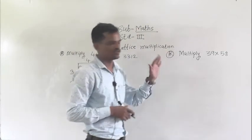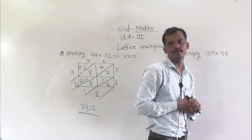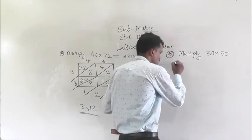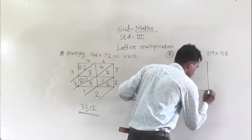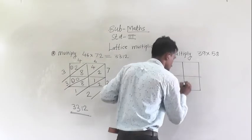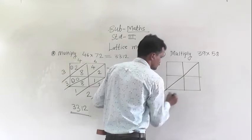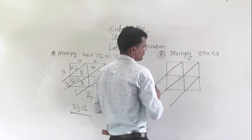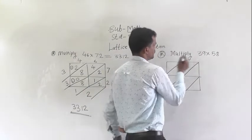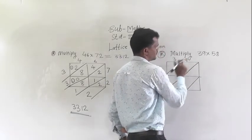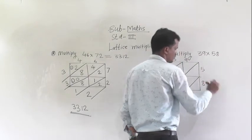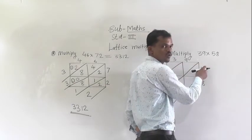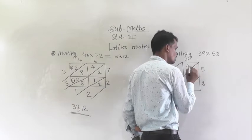Next example we will solve now: 39 multiply by 58. We will solve this example by using the lattice method. First draw one grid like this. Now multiply the nearest numbers — 9 fives are 45, write here 45 like this.